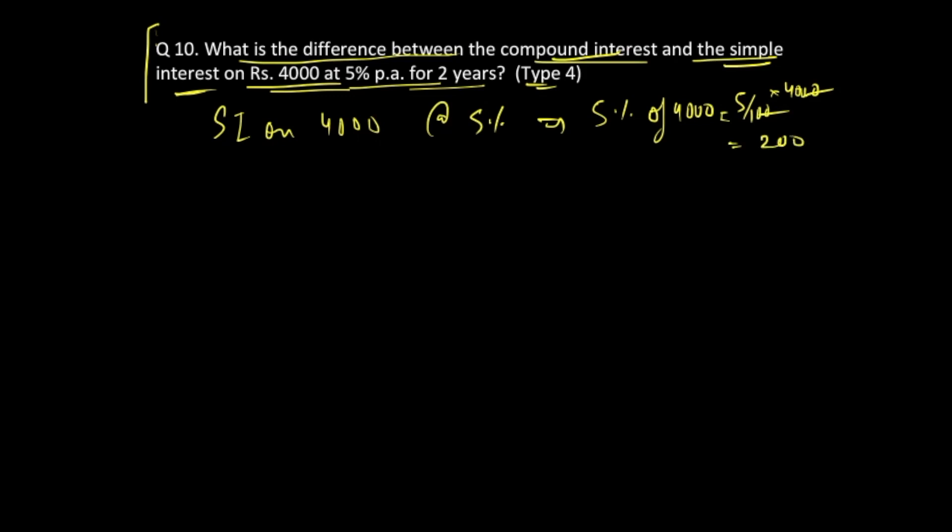Now we have to do that for two years. For simple interest, the amount of interest generated per year is the same. So simple interest for the first year plus simple interest for the second year equals 200 plus 200, which is Rs. 400. This is the calculation for simple interest.